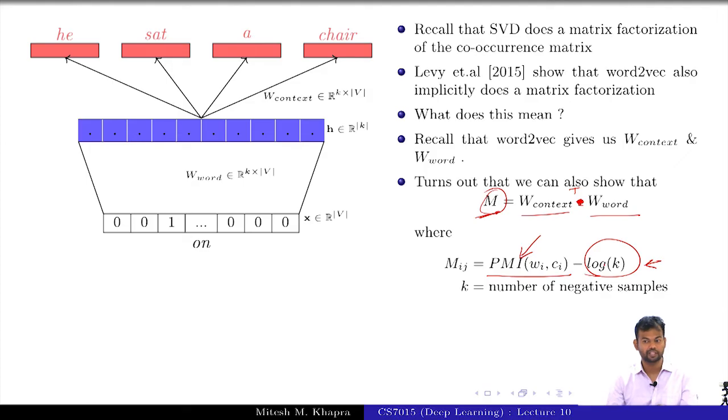There were some subtle assumptions made in the paper, but I don't want to go into those. The key idea here is that you can actually show that SVD and word2vec are actually connected.